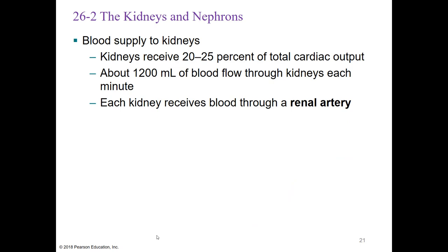The blood supply to the kidneys: kidneys receive 20 to 25% of your total cardiac output, with about 1,200 milliliters of blood flowing through the kidneys each minute. Each kidney receives blood through a renal artery.